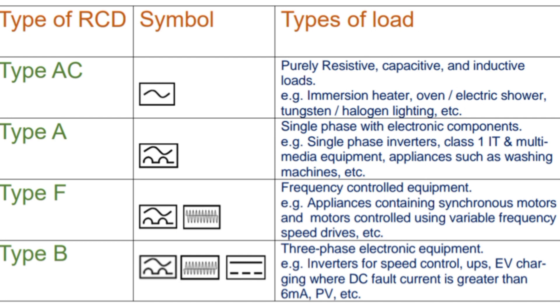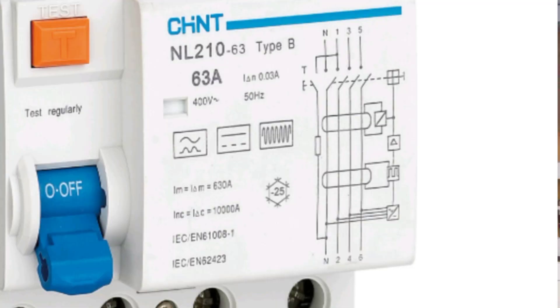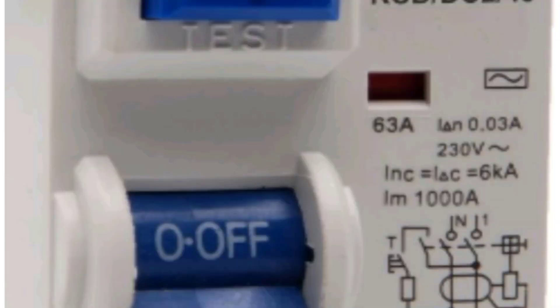This information will guide you as to which particular RCD to choose for your next project. You use the symbols to identify the various types of RCDs. For instance, this is a type B RCD — it can perform the functions of type AC, type A, and then type F. And this is an example of a type AC RCD.